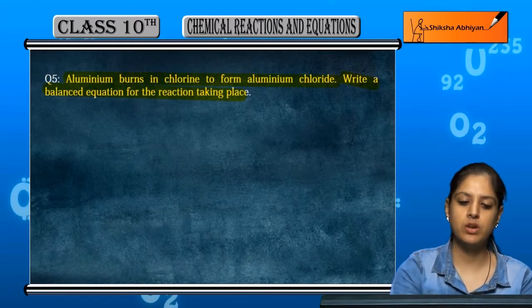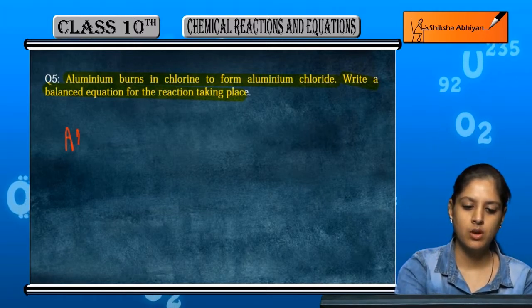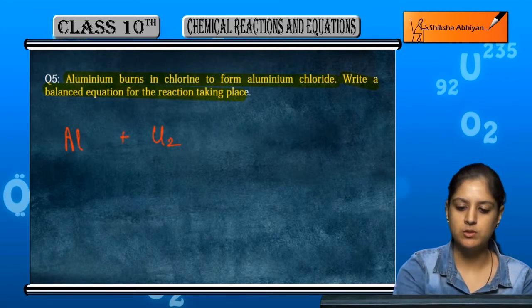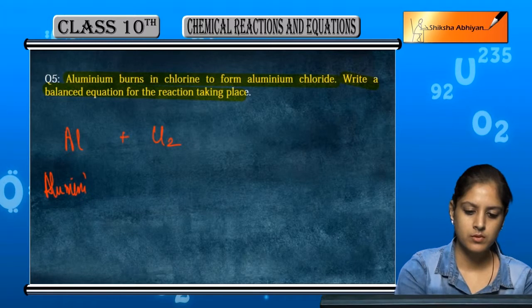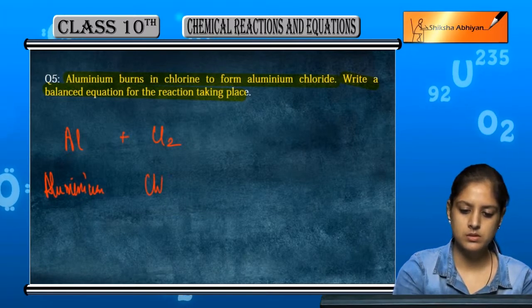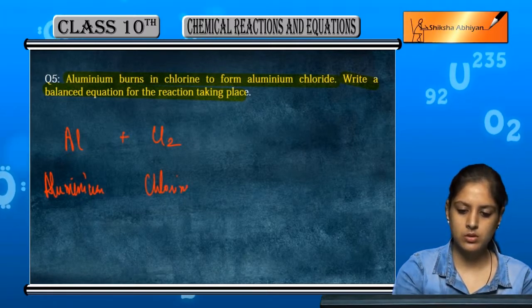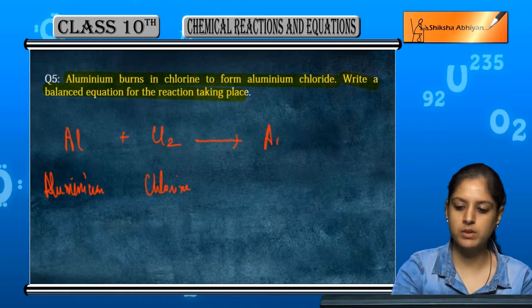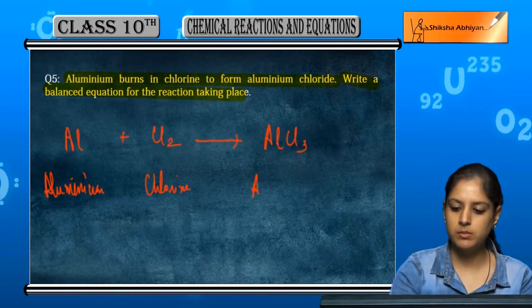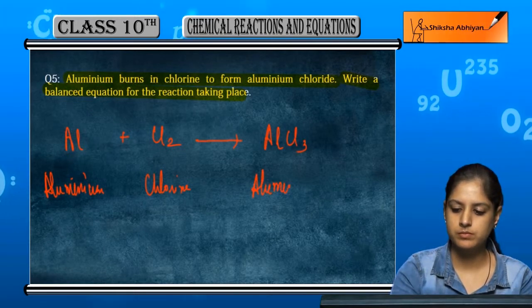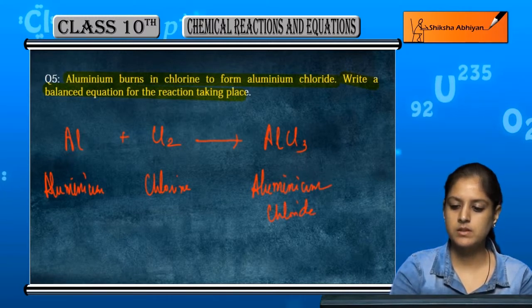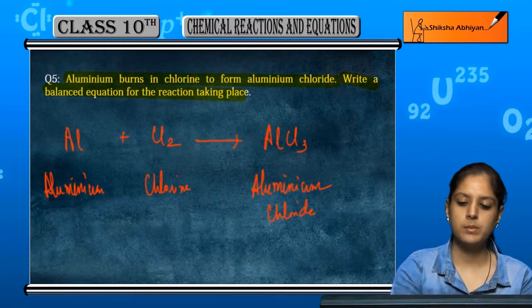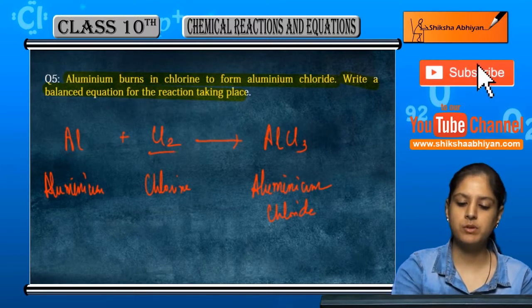The reaction is occurring between aluminium and chlorine. This aluminium and after the reaction they are forming aluminium chloride. Now if you see on the left side there are two.